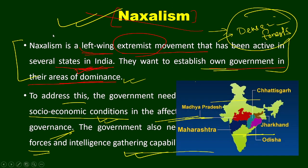This is a map of India showing several states like Chhattisgarh, Jharkhand, Maharashtra, Madhya Pradesh, and to some extent Andhra Pradesh, where Naxal activities are carried out. Naxalites are not active throughout the whole states but in certain areas within these states they are still active.